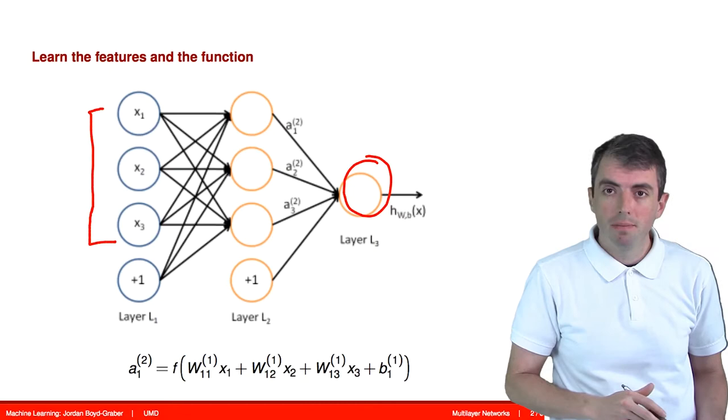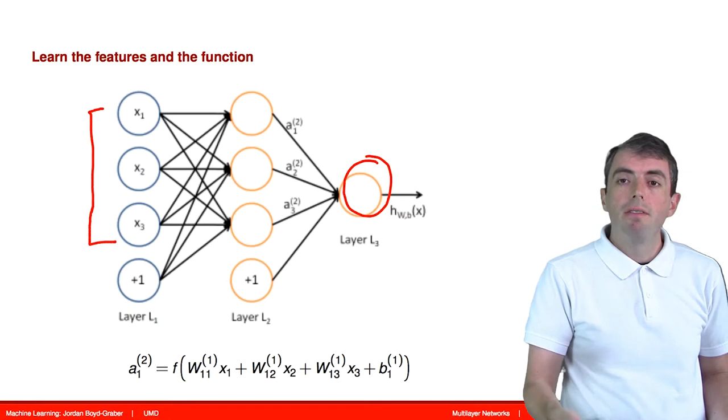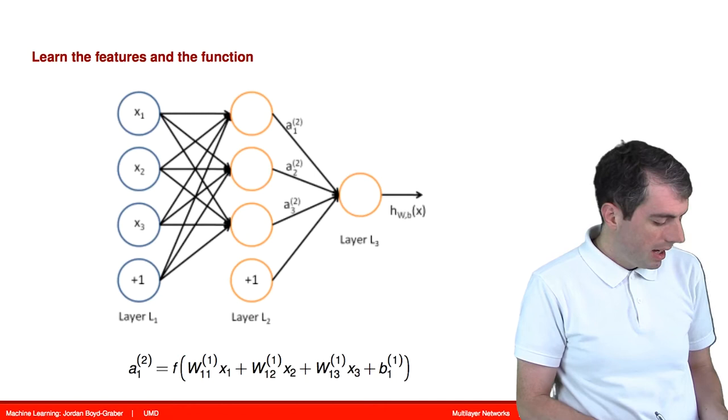In between, which is why we call it a multilayer network, you have other neurons computing intermediate functions. So here you have what's called a hidden layer.